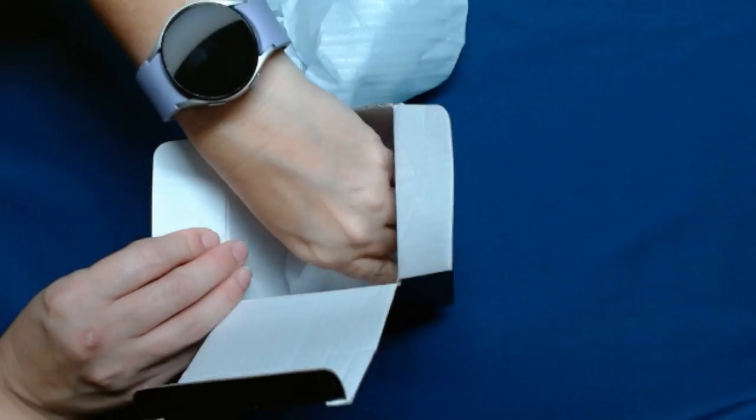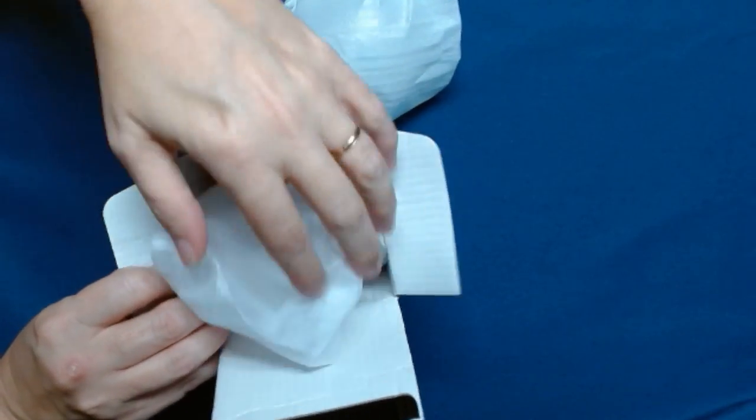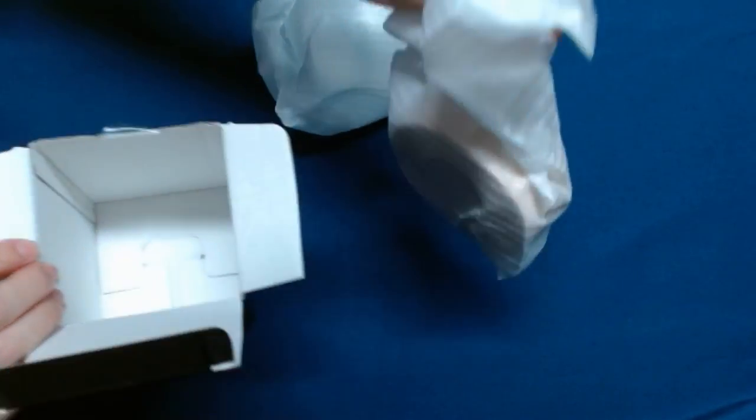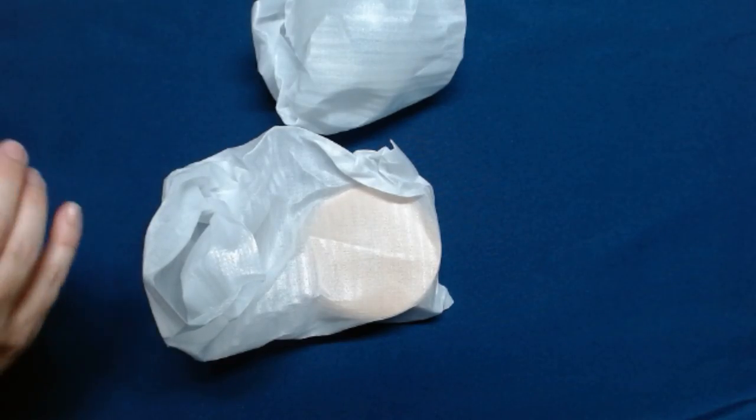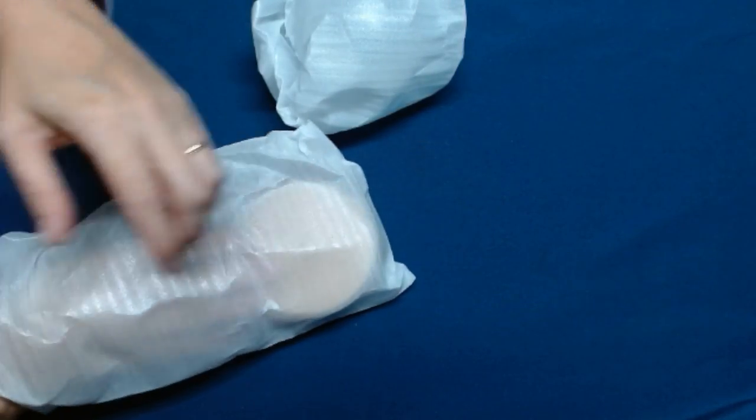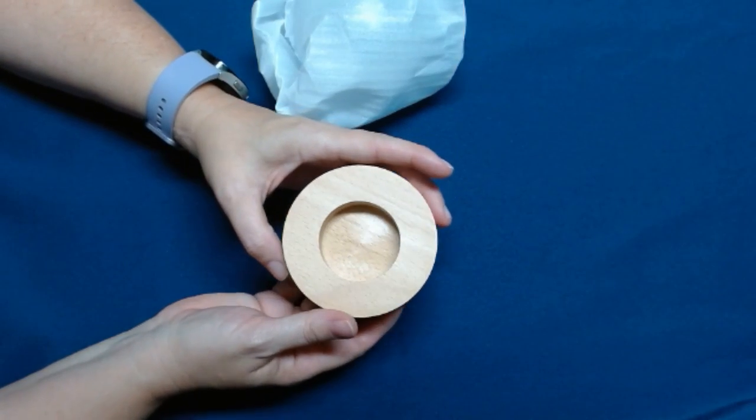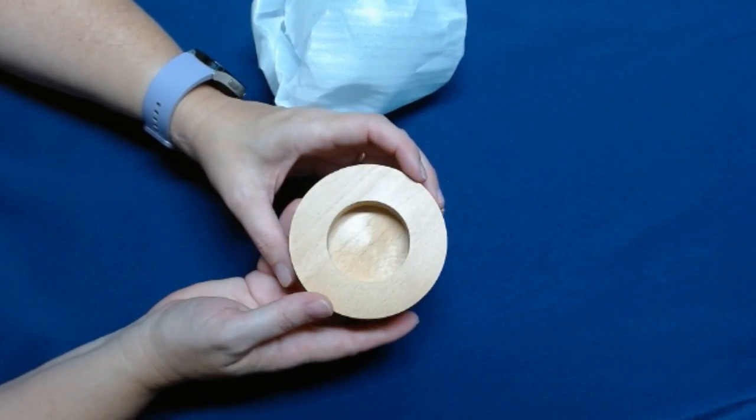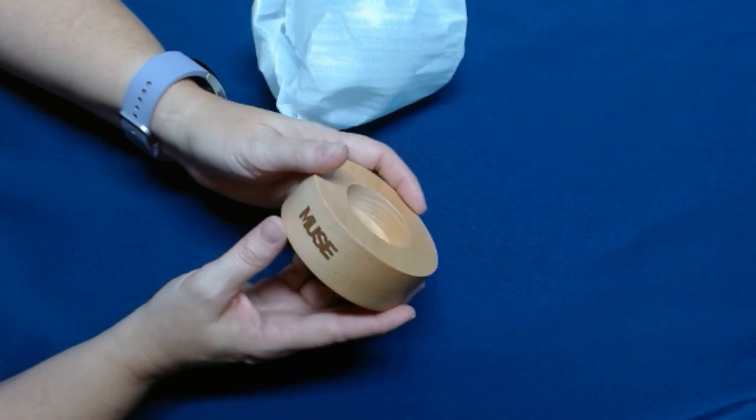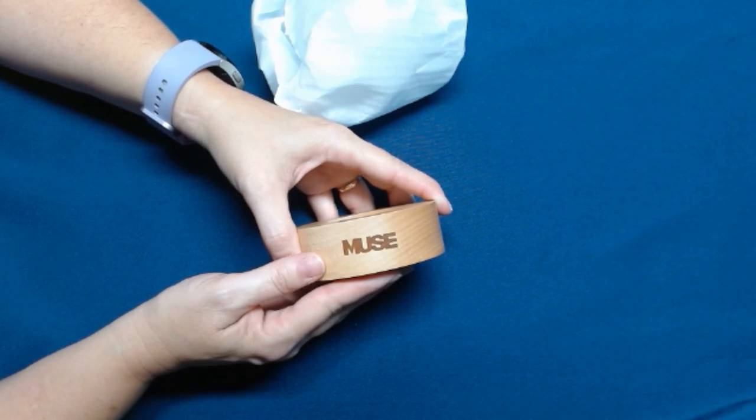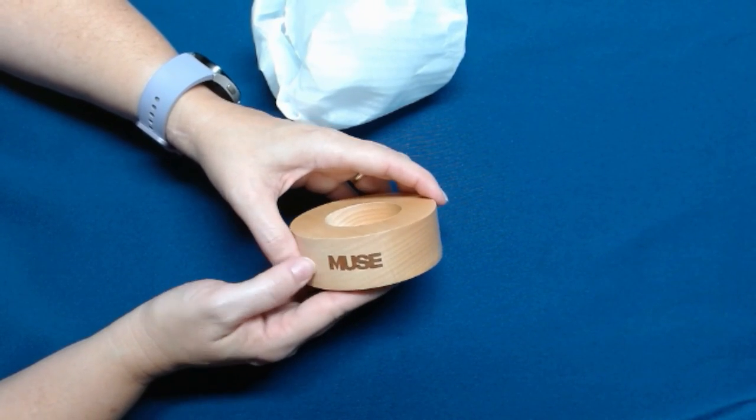I'm going to take the pieces out here. The paperweight comes in two pieces. The first piece is a wooden base. It's got the little divot here and it says Muse on it.